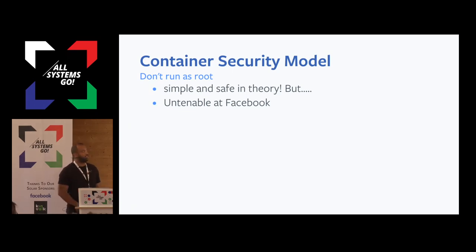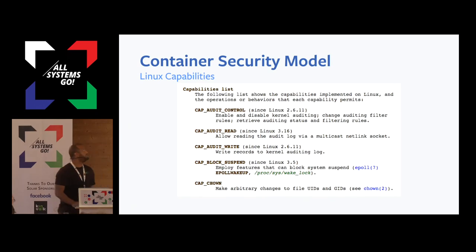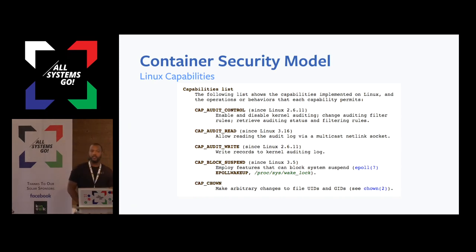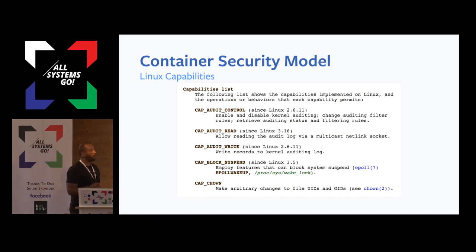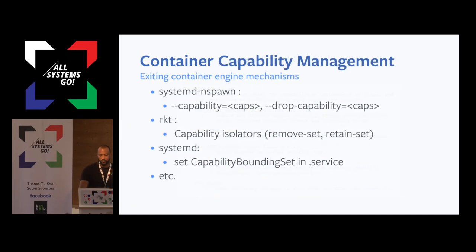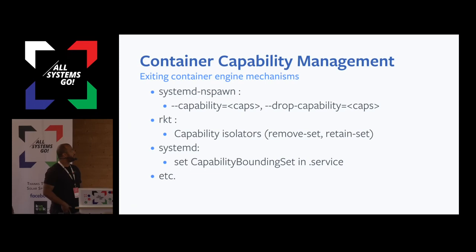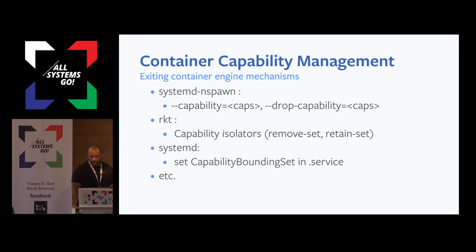What you'll end up having is containers all running as root, and that's bad. This brings us to the next security model: Linux capabilities. Linux capabilities are basically a way to break up root into a bunch of privileged operations, and then you can assign or remove those privileged operations on a per-process basis. It's much better than the alternative. Luckily, we actually have ways of leveraging Linux capabilities on all of the modern container engines — Nspawn, Rocket, Systemd — they all have ways of setting capabilities.